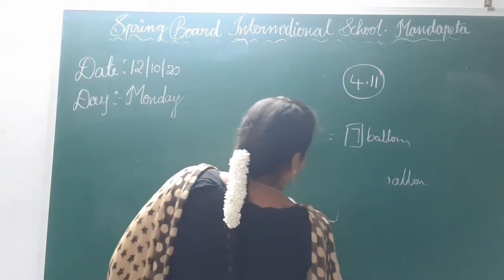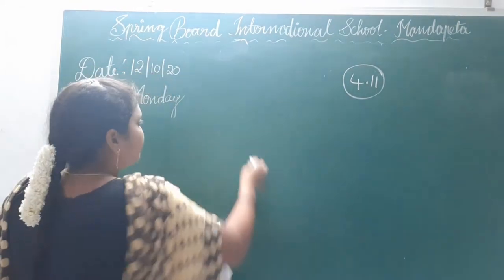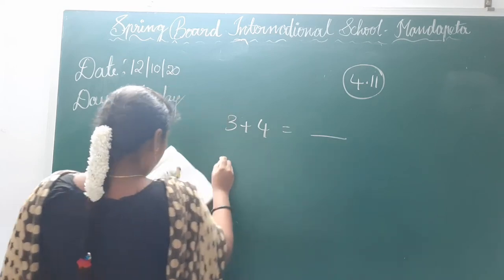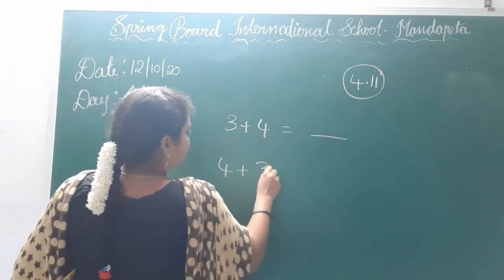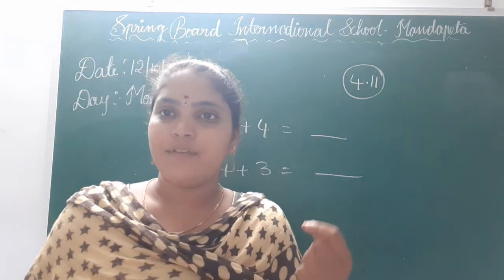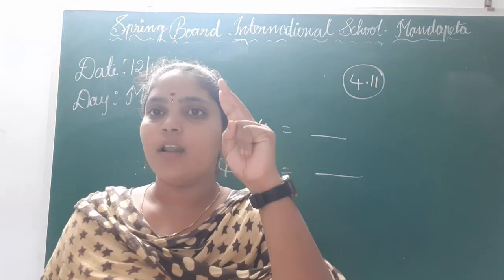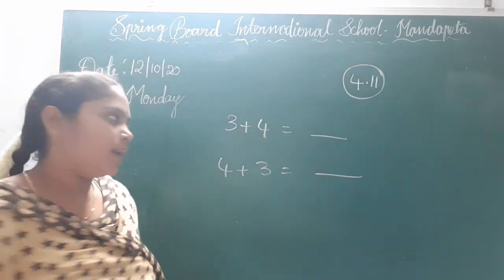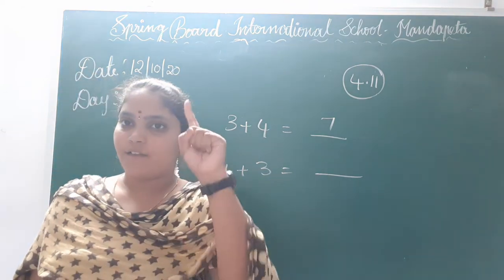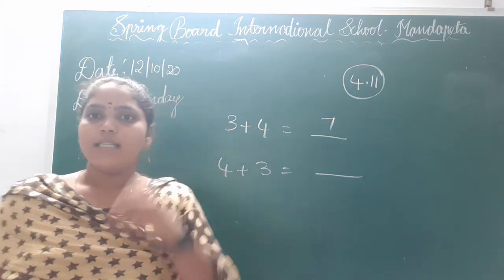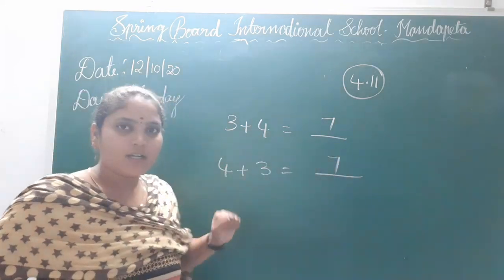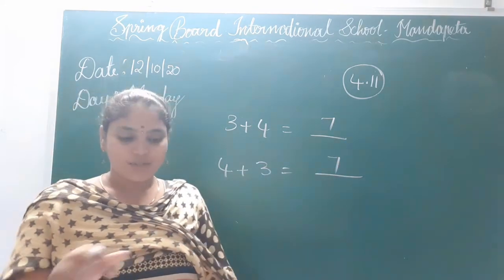Let's go to the next one. 3 plus 4 equals dash, and 4 plus 3 equals dash. So 3 plus 4: 3, 4, 5, 6, 7. Next, 4 plus 3: 4, 5, 6, 7. So here you can see: 3 plus 4 is equal to 7, and 4 plus 3 is also 7.